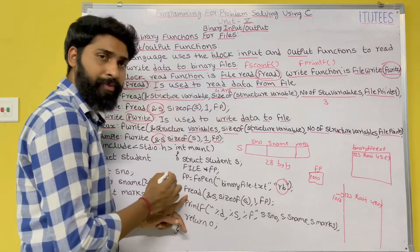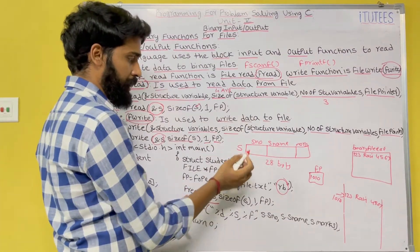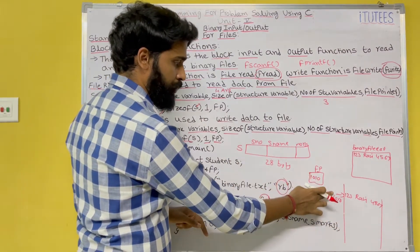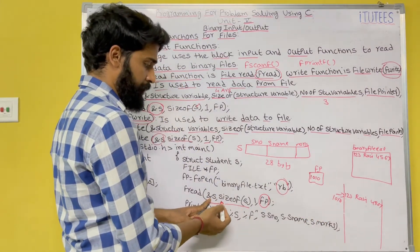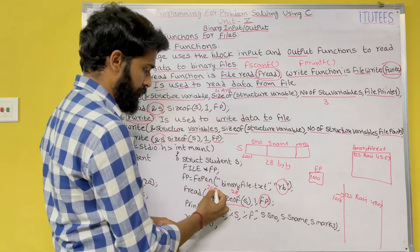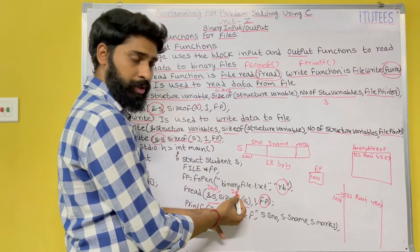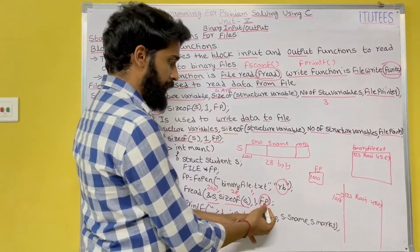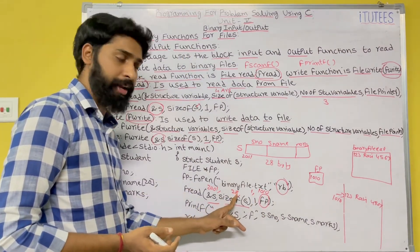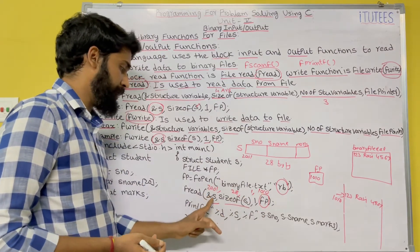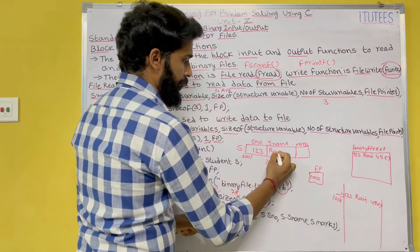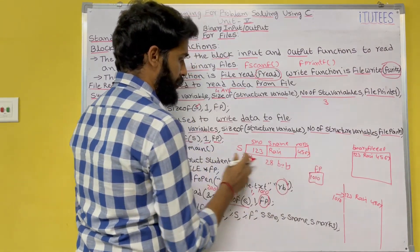Next, fread(&s, sizeof(s), 1, fp). The address of s is, say, 2001. We want to read data from fp which is 1010. sizeof(s) is 28 bytes, the number of records is 1, and fp is 1010. Now we read 28 bytes of data from address 1010 and place it in s at address 2001. So 123, Ravi, and 45.67 are now stored in s.